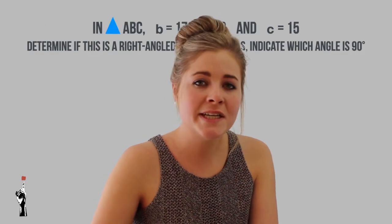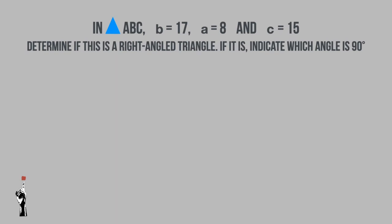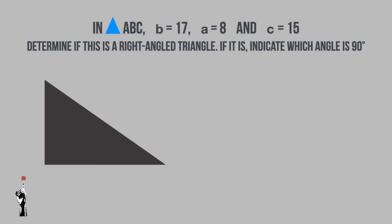In this example they don't give me a sketch — they only give me a word sum. In triangle ABC, side b is equal to 17, side a is equal to 8, and side c is equal to 15. They ask us to determine if this is a right angled triangle. First, since small letters indicate sides, I need to draw a triangle. Comparing my sides: 17, 8 and 15 — I can see that 17 will be my longest side, so this will most likely be my hypotenuse. So b equals 17 is my hypotenuse, and since side b is opposite angle B, I write angle B on the opposite side.